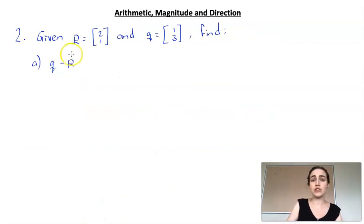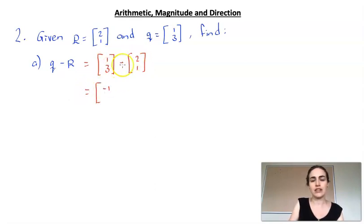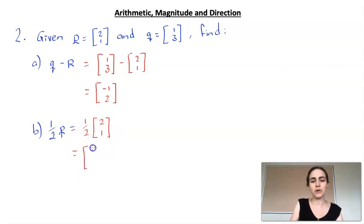In our second example, we're using column notation. Given p and q, we want to find q minus p. Rewriting that: we have column (1, 3) minus column (2, 1). Going across our rows: 1 minus 2 gives minus 1, and 3 minus 1 gives 2. The second part has half p, meaning we're doing one half of column (2, 1) — multiplying each number by a half — so the top is 1, and the bottom is one half, which you can also write as 0.5.